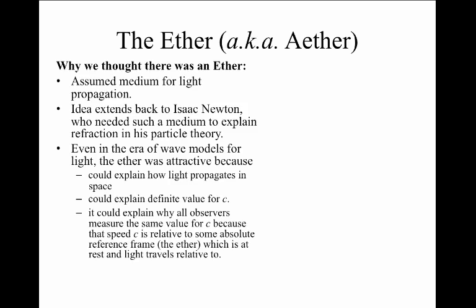The ether could explain why light has a definite value for its speed of c, and the ether could explain why all observers would observe this same value for c, no matter how fast they're moving with respect to the light source or toward it or away from it, because all of them are well-defined with respect to some absolute rest frame defined by the ether.